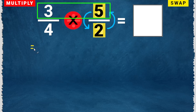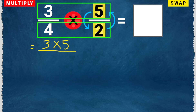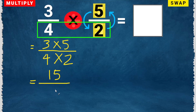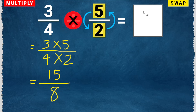Multiply the numerators: 3 times 5. Then multiply the denominators: 4 times 2. Let's solve this. 3 times 5 is 15, over 4 times 2 is 8. So the answer is 15 over 8.